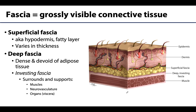Fascia means grossly visible connective tissue — and when I say gross here, I don't mean disgusting, I mean visible to the unaided eye. You will be taking gross anatomy with us, which is what we're going to be looking at, dissecting, and learning about, as distinct from histology which is covered in other components of your curriculum.